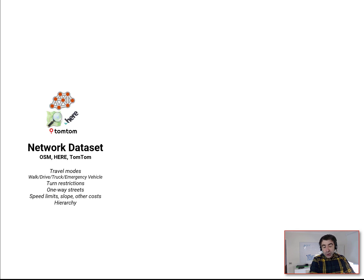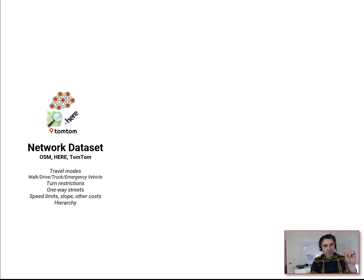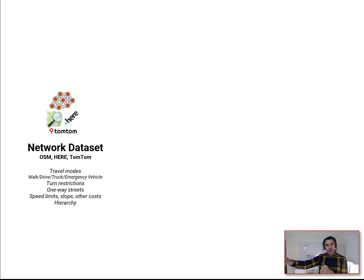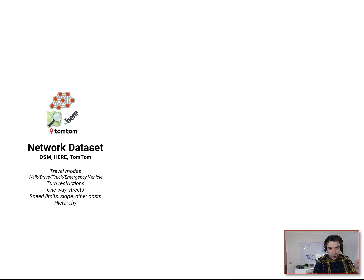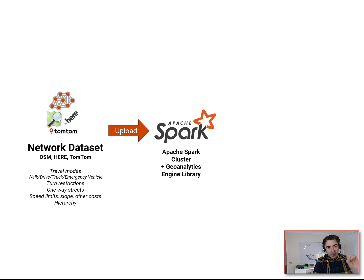For network analysis, you do need a network dataset — and I need to emphasize this is more than just a streets dataset. It defines how different vehicles can traverse across the network. A pedestrian can ignore one-way signs but might not want to go along a highway, whereas a truck with a certain weight and height won't be able to go over certain bridges and tunnels. This network dataset includes all of that logic and travel modes, and is uploaded and made available to your Spark cluster.